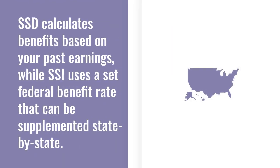Another difference is in how each program decides the total amount of your benefits. SSI uses a set benefit rate that is decided by the federal government. Depending on the state you live in, your state may add to this amount as well.